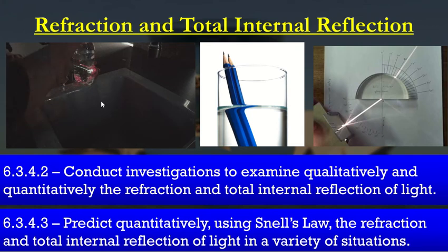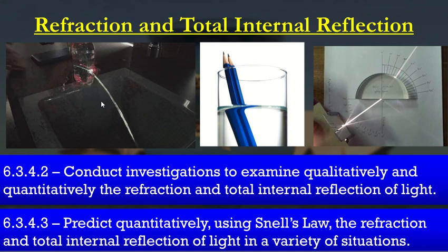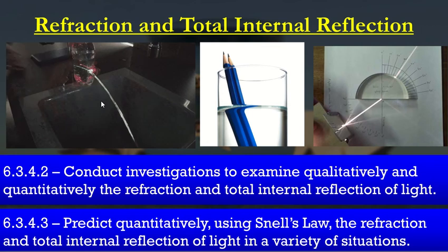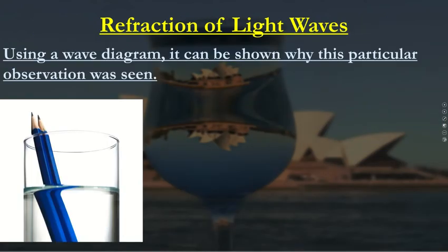If you have a look at the three images on the left-hand side, that is an example of internal reflection of light — you can see that light isn't travelling outside, or is travelling inside the water. We have refraction in the two middle images here, showing the bending of light.